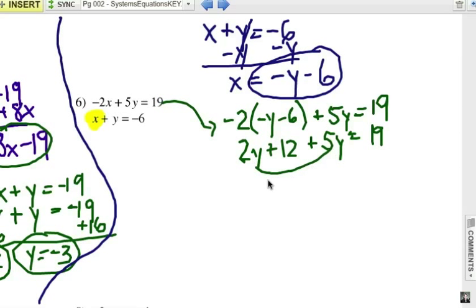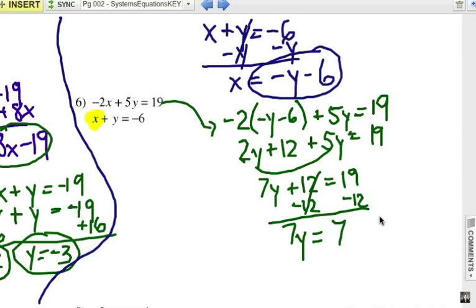Combine my y terms together, so 7y + 12 = 19. I'm going to subtract 12 from each side. The goal is to get the y by itself, right? So 7y = positive 7, and y must be equal to 1.